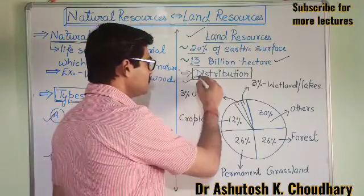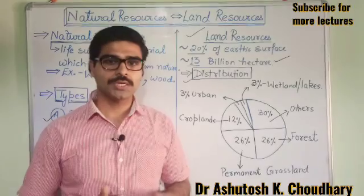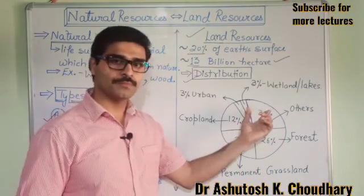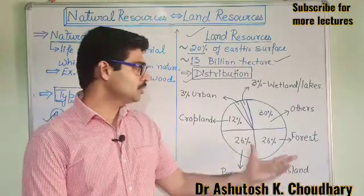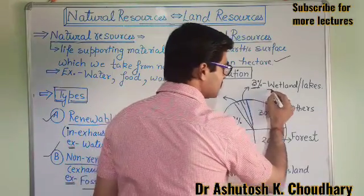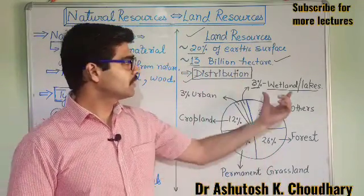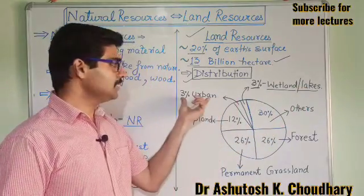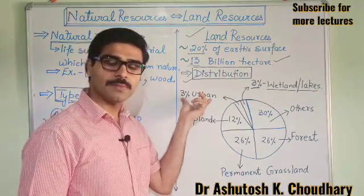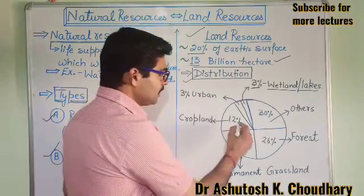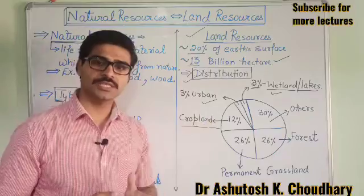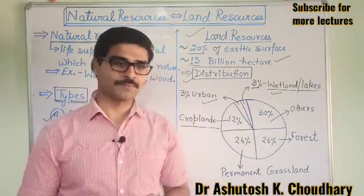Now distribution — how we can distribute land resources into different segments. Here in this diagram I will tell you about the distribution of land resources. So here you can see that 3% out of the total land resources is covered by wetlands and lakes. Next 3% is covered by urban area where cities, buildings, and industries are there. Next 12% is covered by cropland, meaning utilized for agricultural activity — that is 12% only.